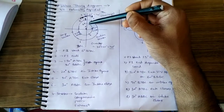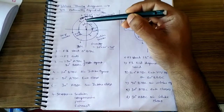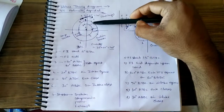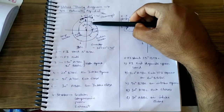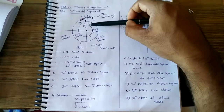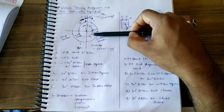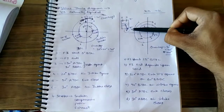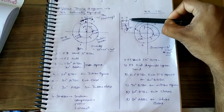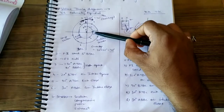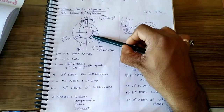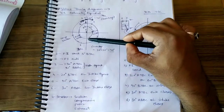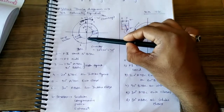At point two, where fuel injection ends and the piston is near TDC, the fuel present will burn and push the piston down, creating power — that is why it is called the power stroke. The piston is now coming down from TDC to BDC. At point three, the exhaust valve will open before BDC, before the piston reaches BDC.